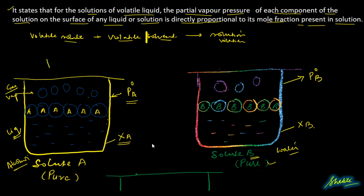That means the partial vapor pressure of A (P0A) is greater than the partial vapor pressure of B (P0B). Or we can say, partial vapor pressure of B is less than partial vapor pressure of A.